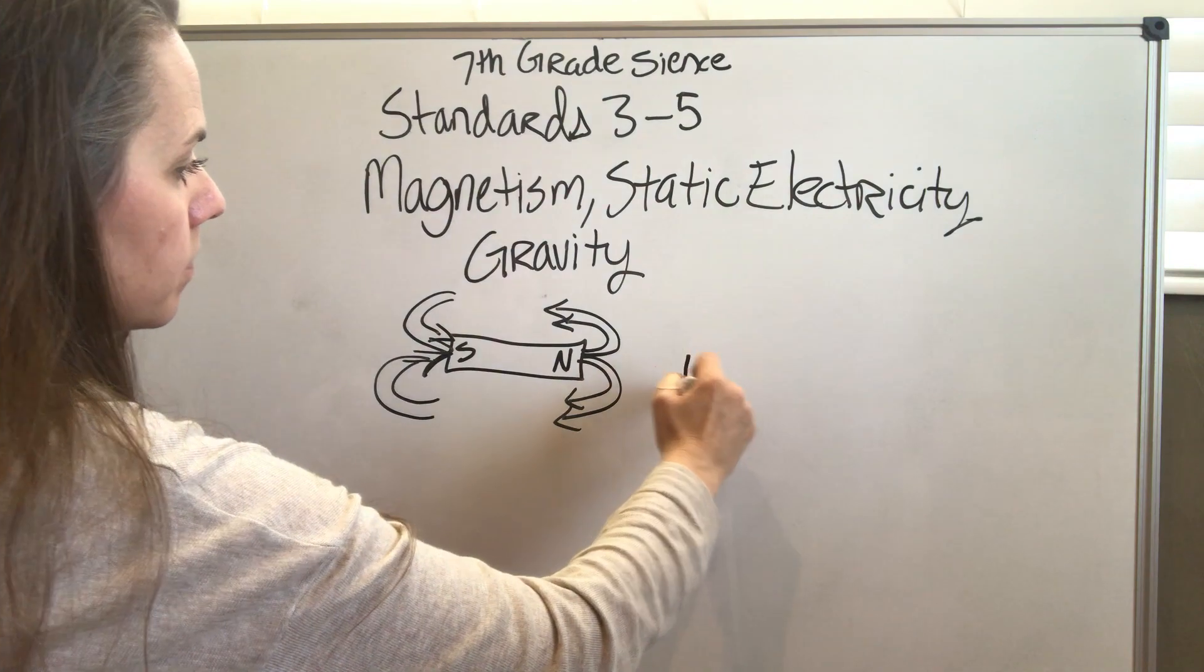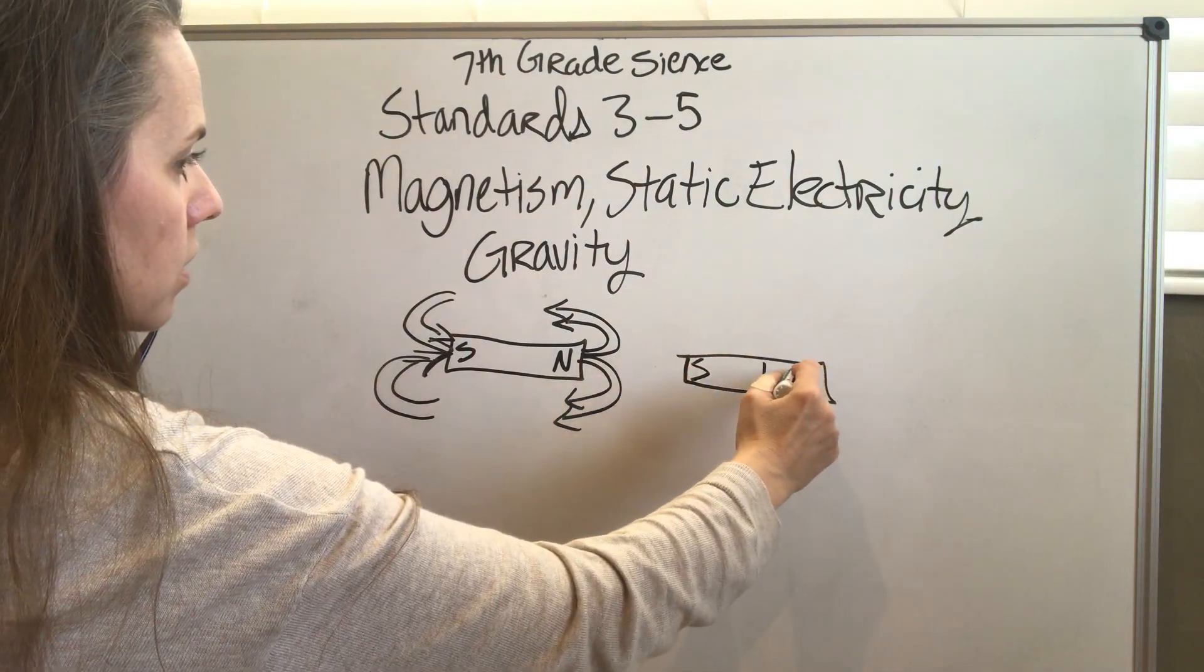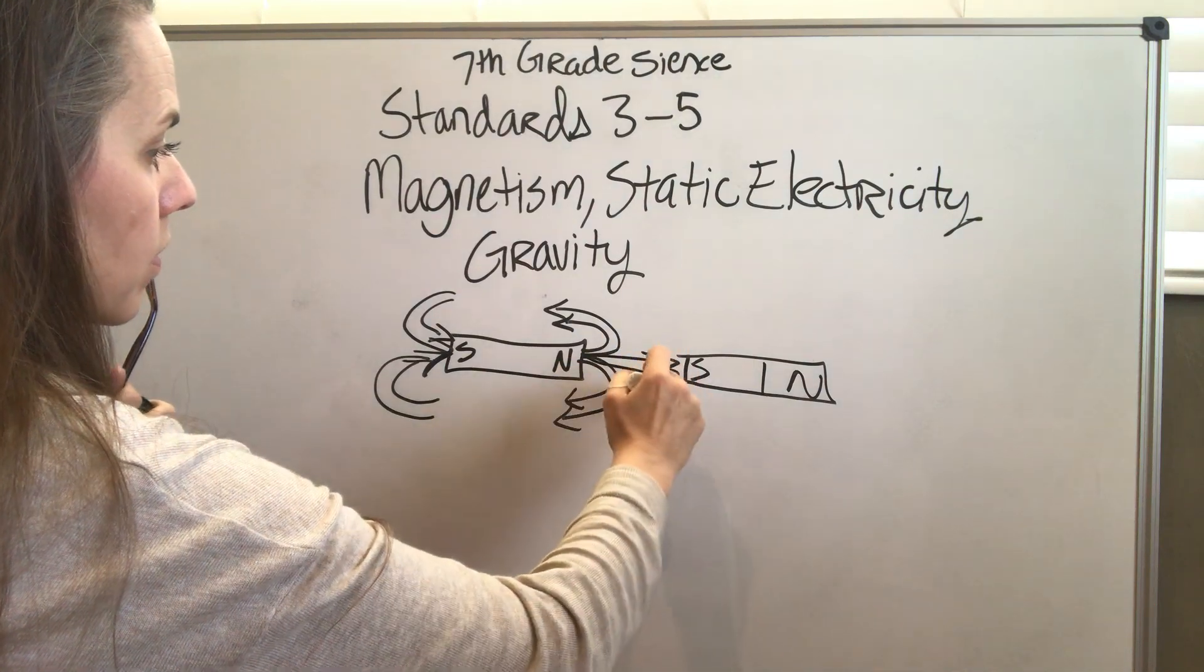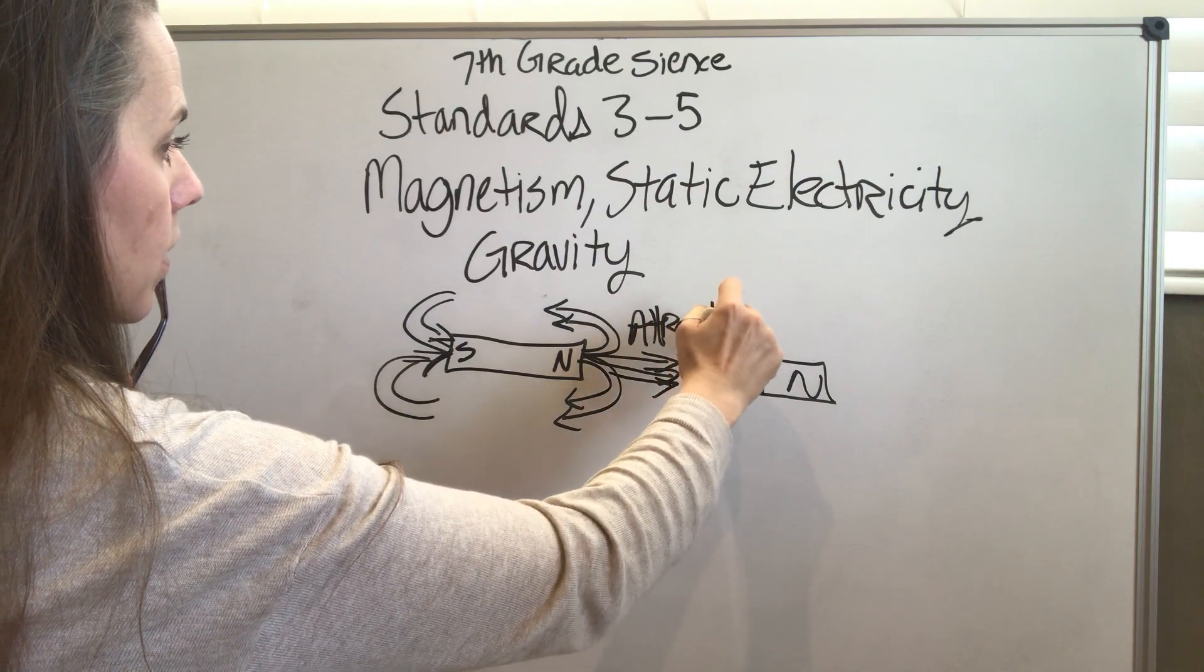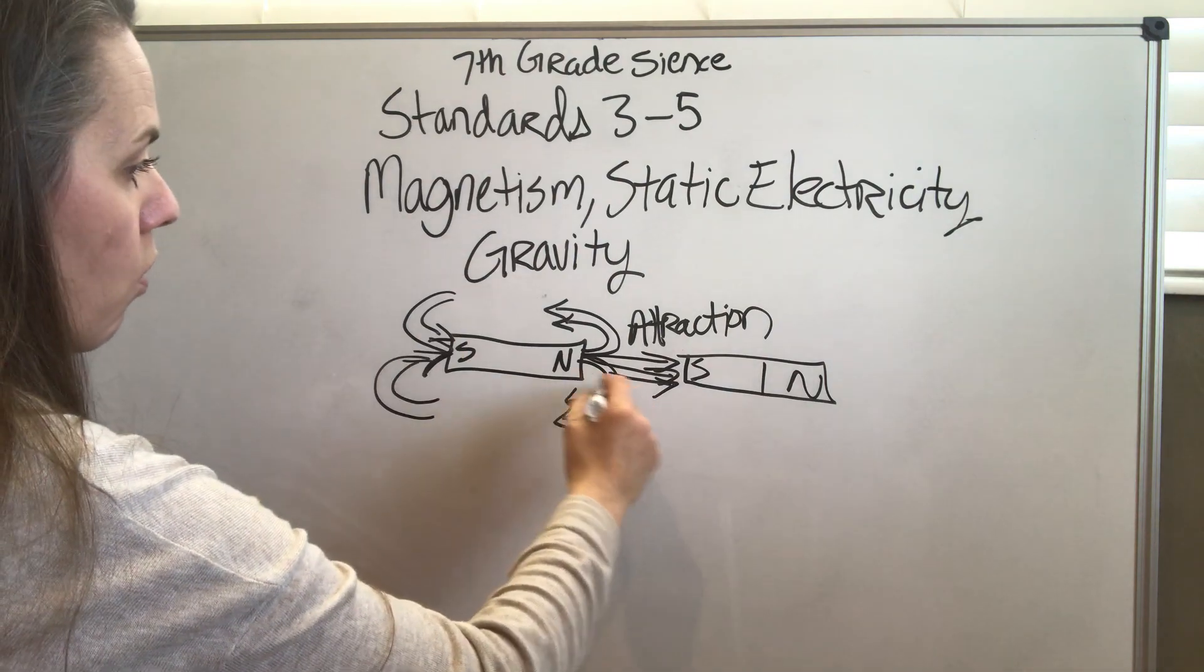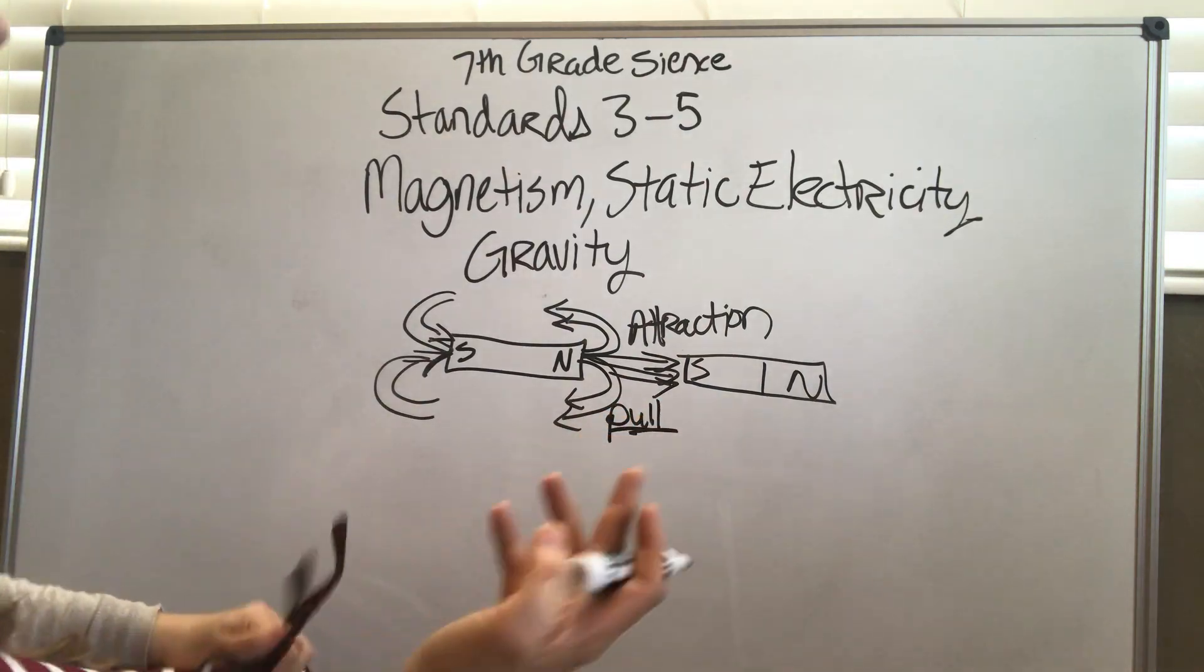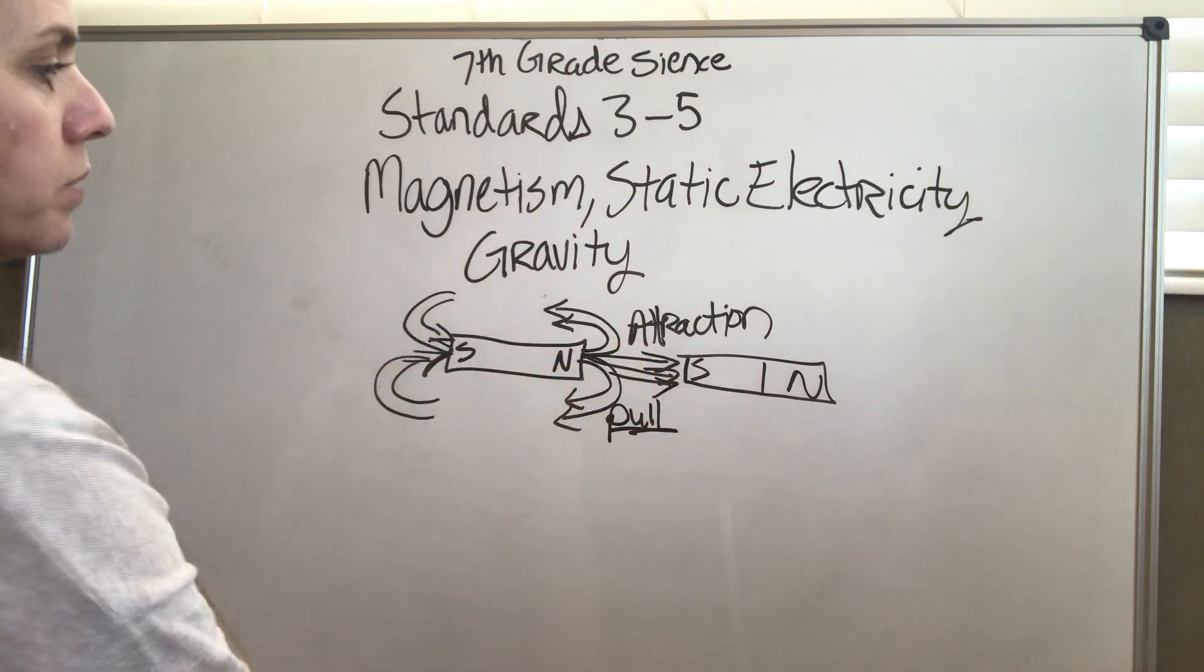If you get another magnet here and this is the south side and this is the north side, then these two magnets are going to attract. This attraction is going to pull these magnets closer together. That's the action, the acceleration, the movement - there's a pull force that is attracting two objects together.